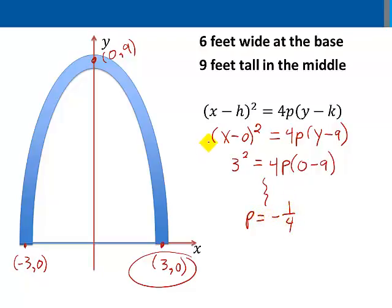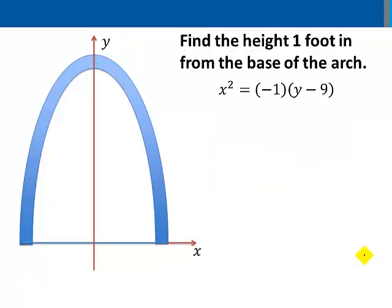I'll plug negative one-fourth back into our equation to give us x² = 4 times negative one-fourth times (y - 9). Four times negative one-fourth equals negative one, resulting in the equation x² = -1(y - 9).